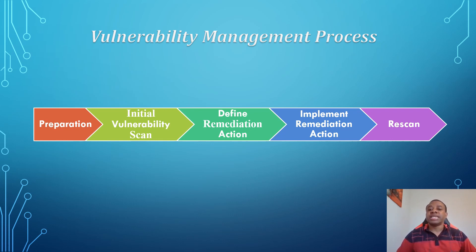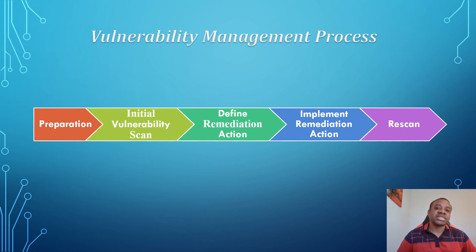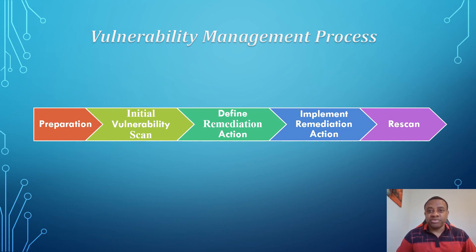That takes us to the implement phase — you implement your remediation action. In implementing your remediation action, you determine if a short-term remediation is possible. For example, if you identify a high impact vulnerability to be remediated within 30 days and it can be remediated in that period, you go ahead and remediate it. If it cannot be remediated within that period, you implement compensating controls to mitigate or remove the risk without actually fixing the vulnerability.